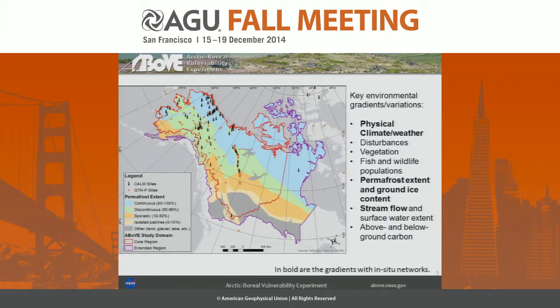Those gradients include physical climate, weather, permafrost extents, ground ice content, and stream flow. These boundaries were developed based on the geographic and political boundaries of the region — that's how they were selected.